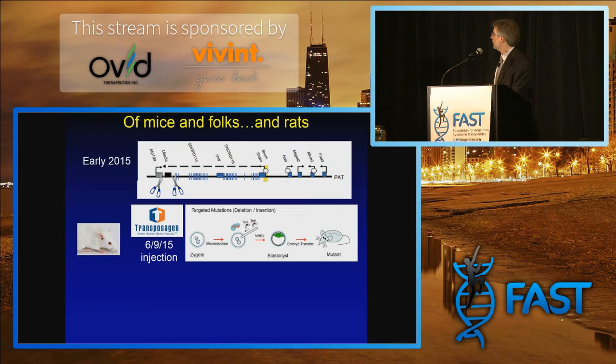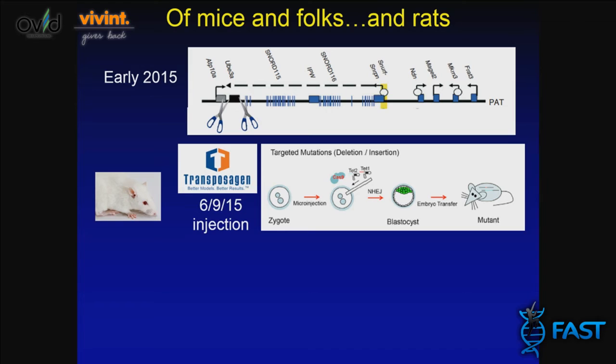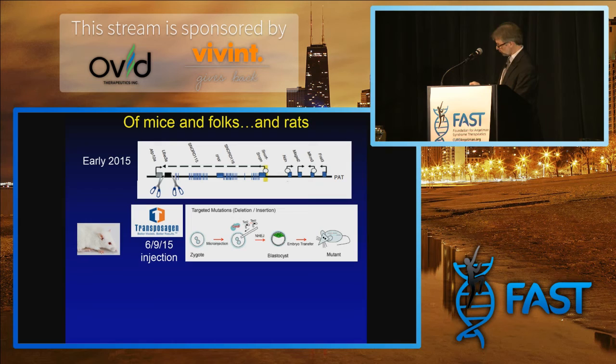We designed these parts and gave them to the company Transposagen to inject into rat embryos. The way these experiments are done is these things are designed and then injected into a one-celled embryo — the one-celled stage of the animal. It goes in and cuts out the UBE3A gene. That cell can then continue its development into a rat. Out of that, we're able to get animals, and some of those animals will contain the deletion we're interested in. The injections were done in June, and the first animals were born in July — these gave us the founder animals.